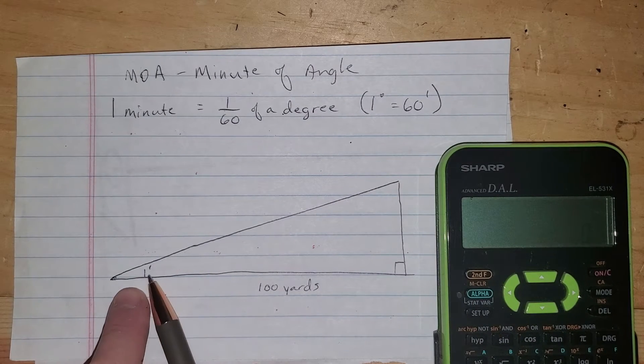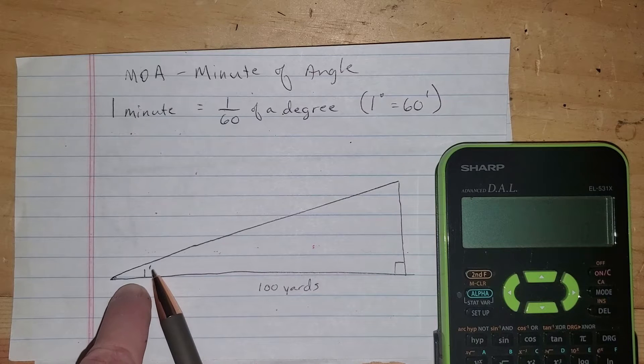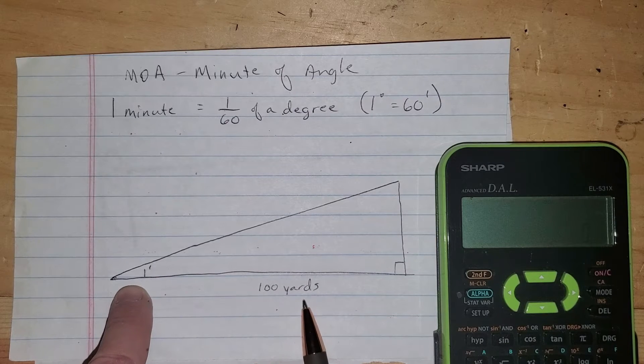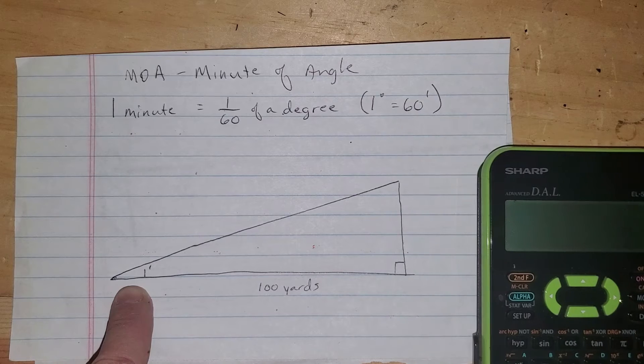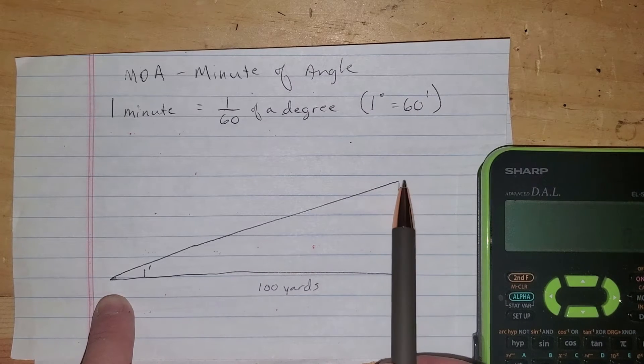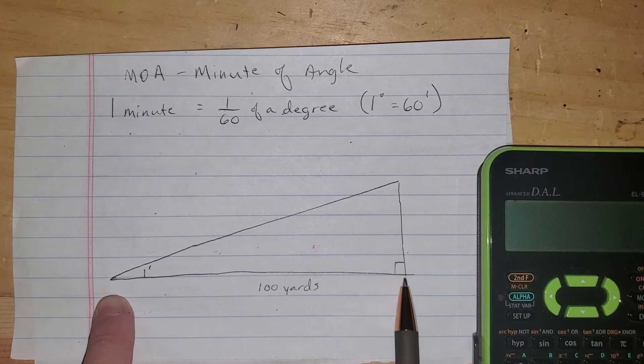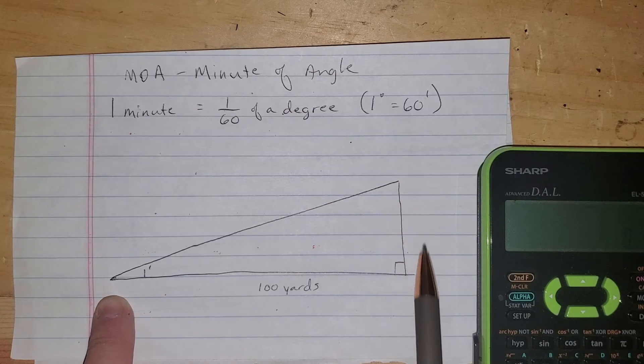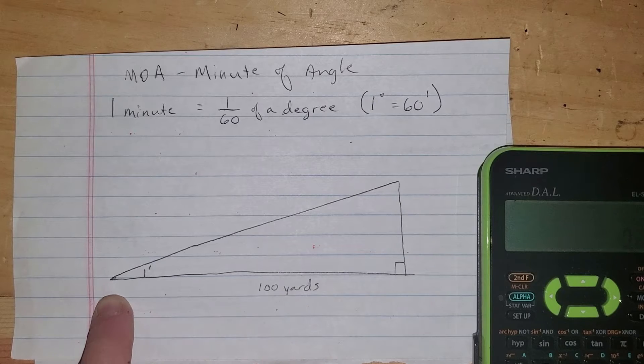So here's the deal. I've got one minute, one MOA at 100 yards, and what I want to find is if I adjust, so here's where I'm aiming, and here's where my bore is pointing. What is this distance at 100 yards?